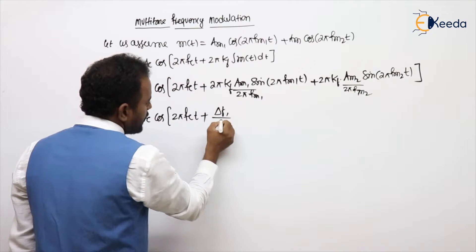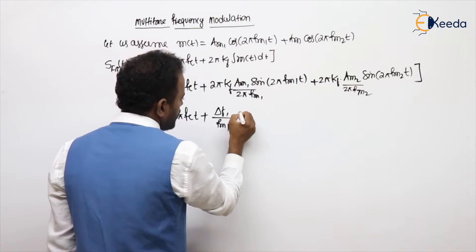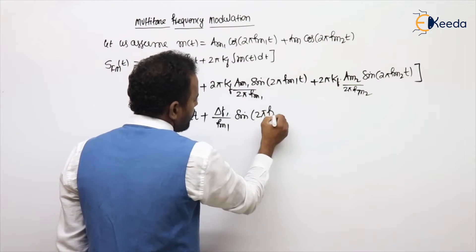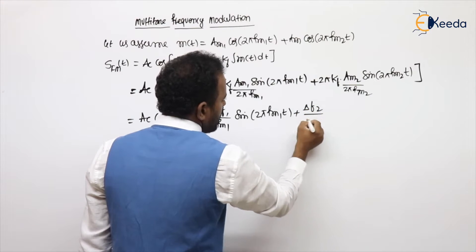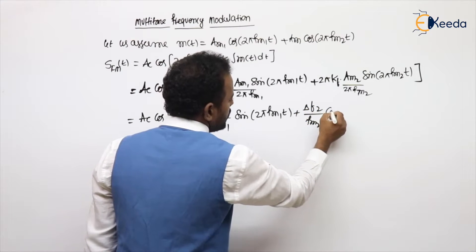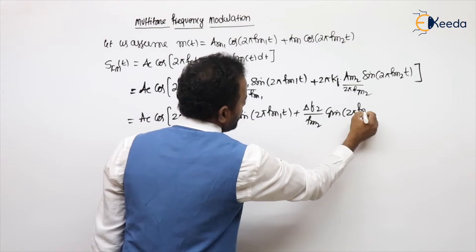You can take Δf1 by fm1 into sine 2π fm1 t. This will be Δf2 by fm2 into sine 2π fm2 t.